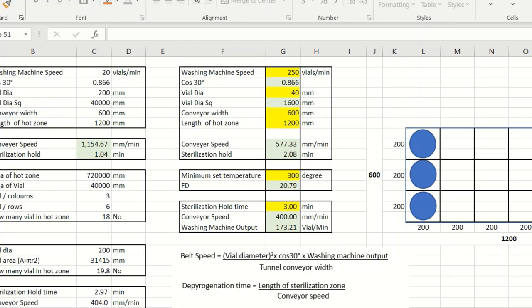Let's calculate with some realistic values where I took my machine speed is 250 vials per minute. Vial diameter I consider 40. I kept same width and length of my tunnel hot zone. We can see conveyor speed is coming 577.3mm per minute and sterilization hold we are getting 2 minutes.